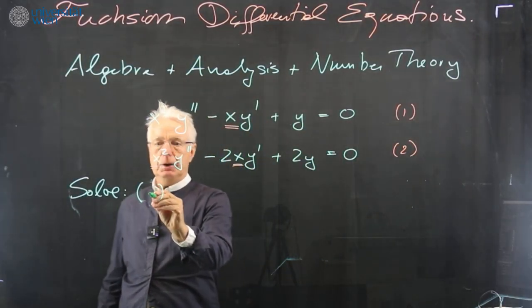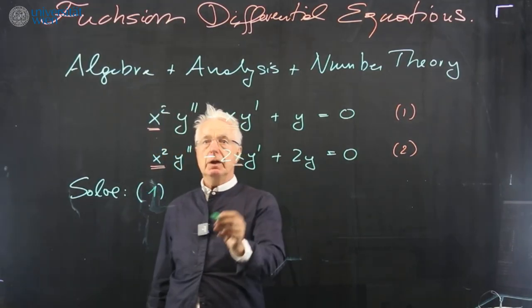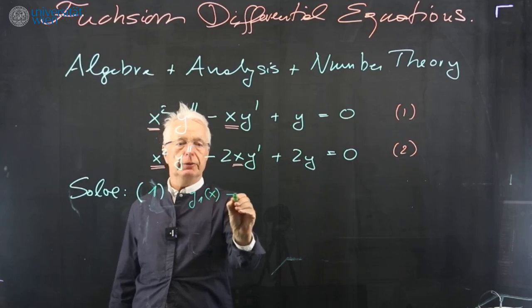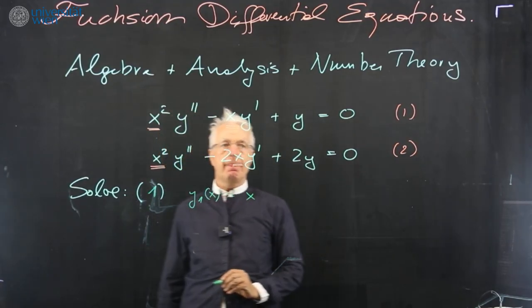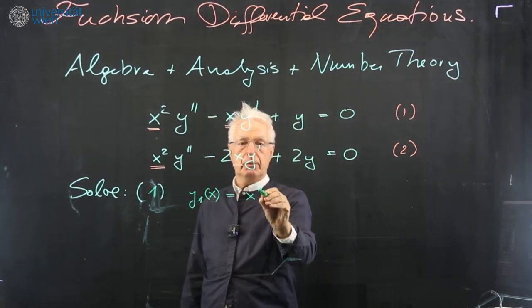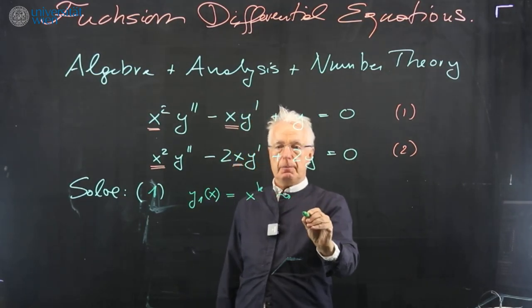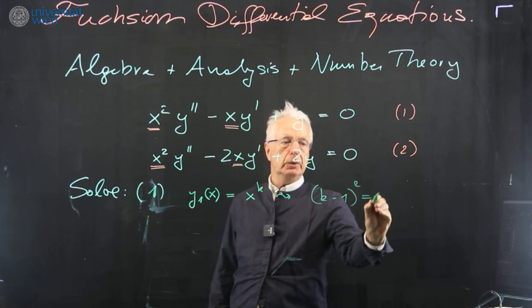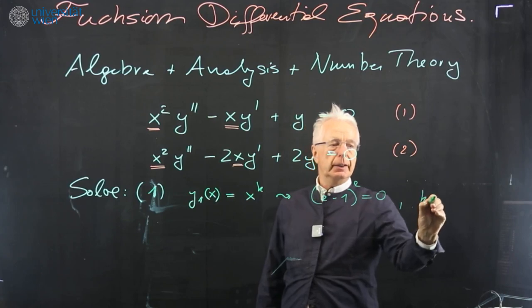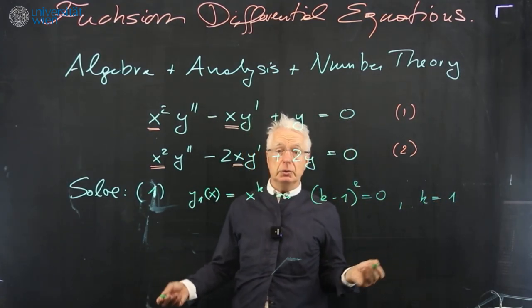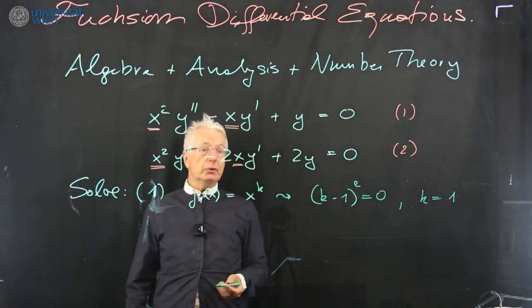So let us now consider equation 1. And it's easy to see that you get a first solution, y of x equals x. But here the equation for k will give you k minus 1 squared equals 0. So k is 1. But you just have found one solution. So where is the second solution?